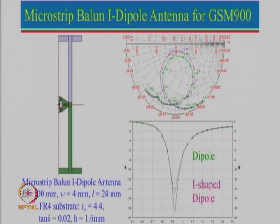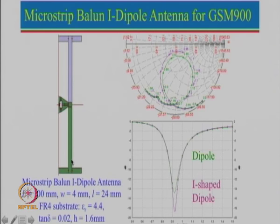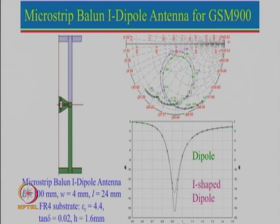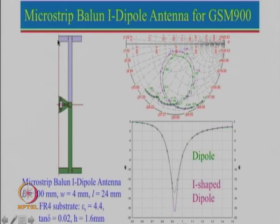Here is another variation known as the I-dipole, also called a top-loaded dipole antenna. It looks like an I configuration. The advantage compared to the previous configuration is that the total vertical length is reduced — in the previous case the total length was 127 mm, whereas the total vertical length here is about 100 mm — but we have added horizontal loading strips at the ends.